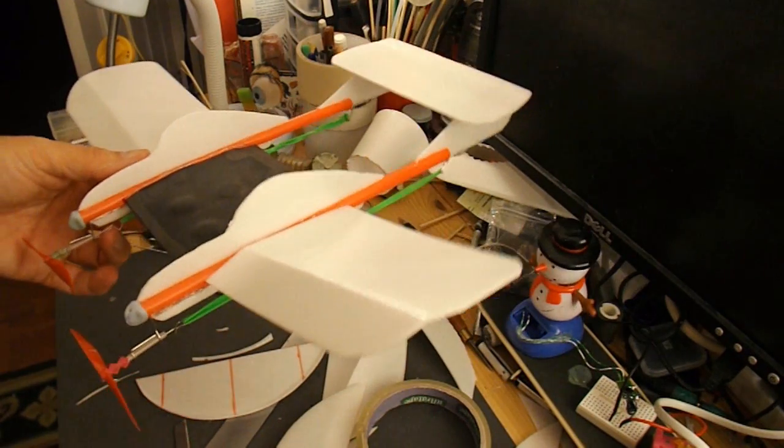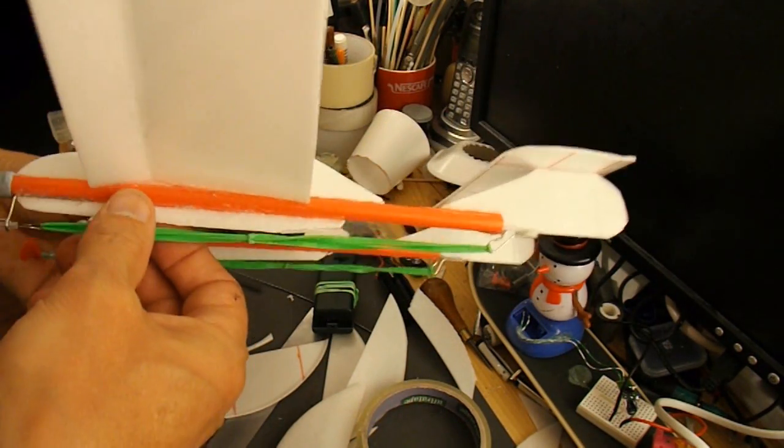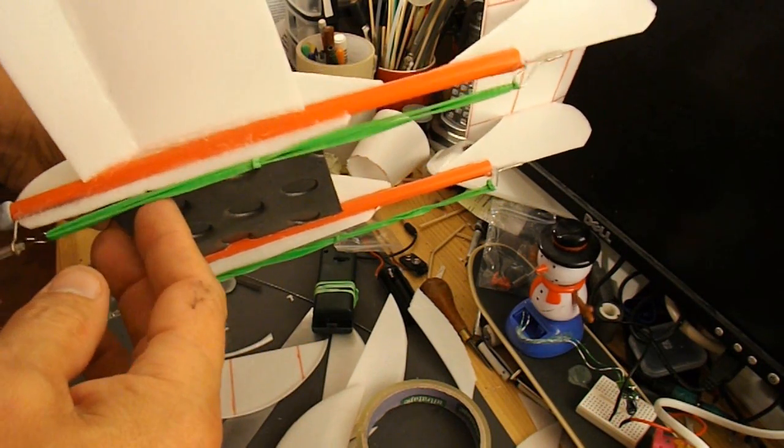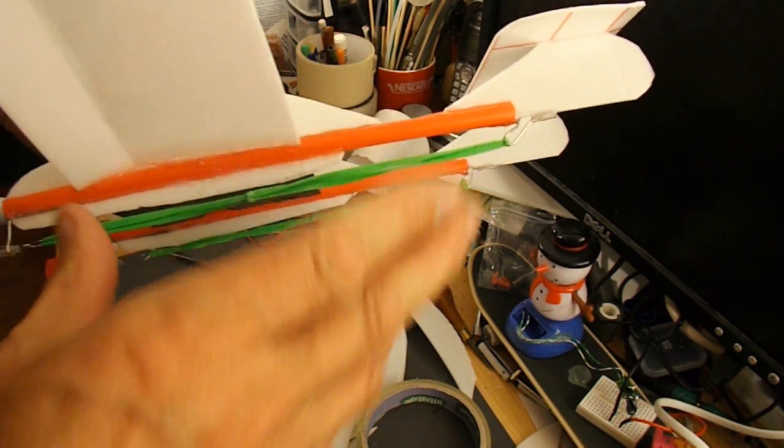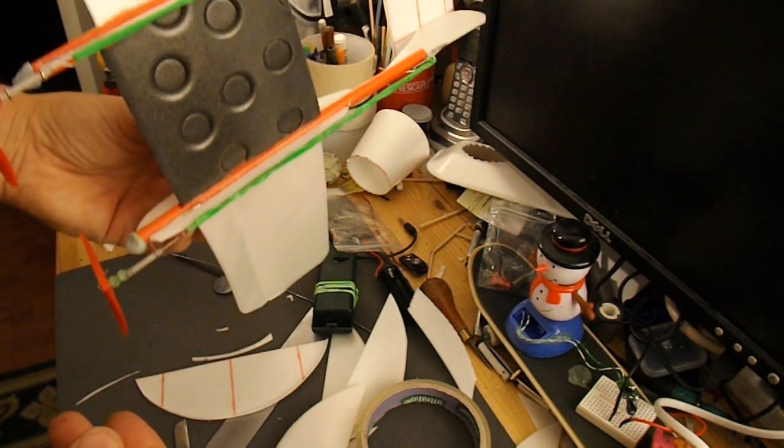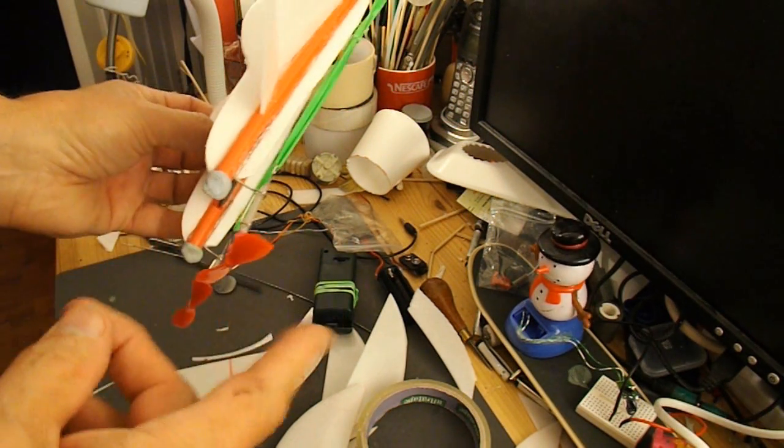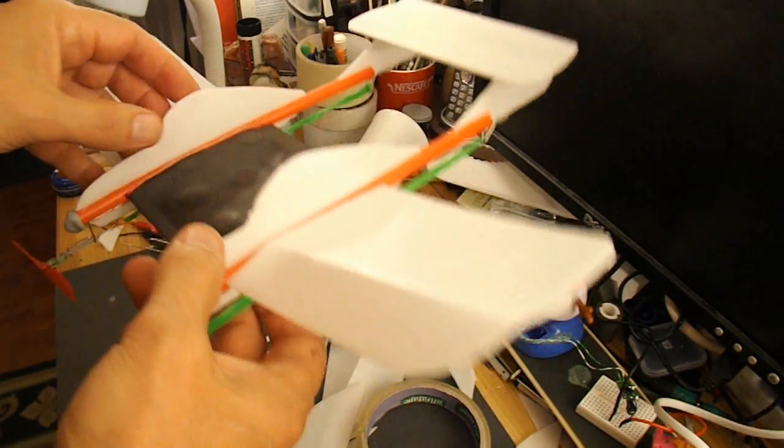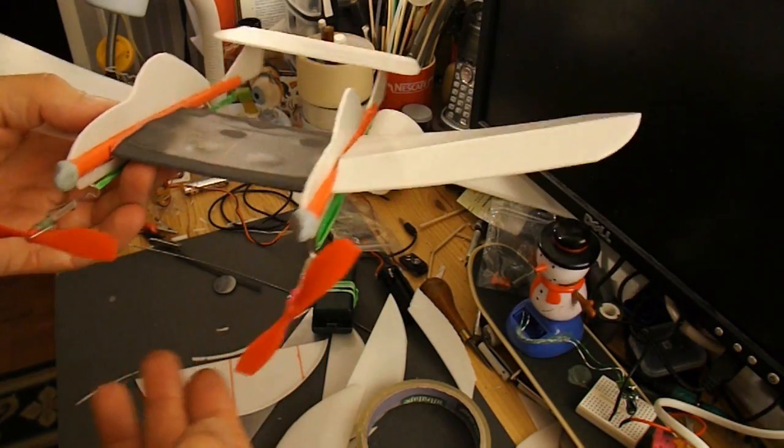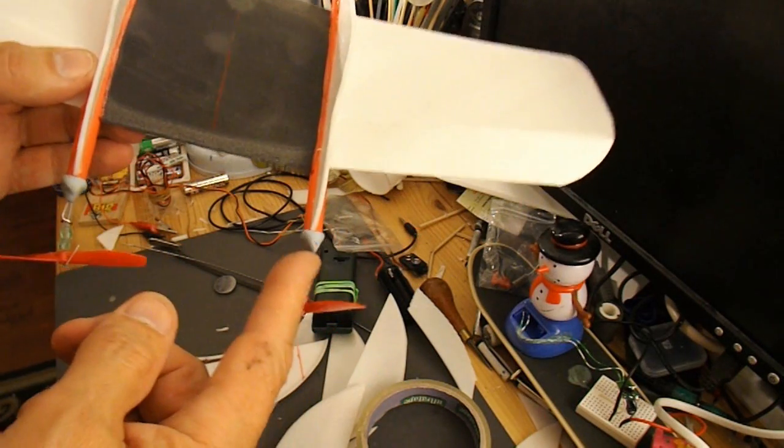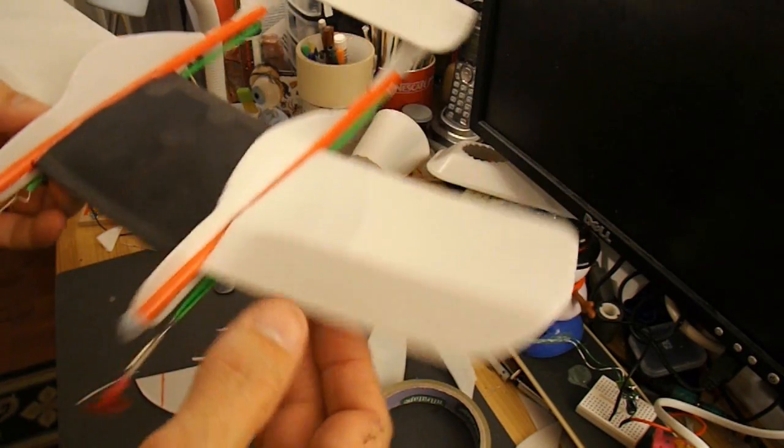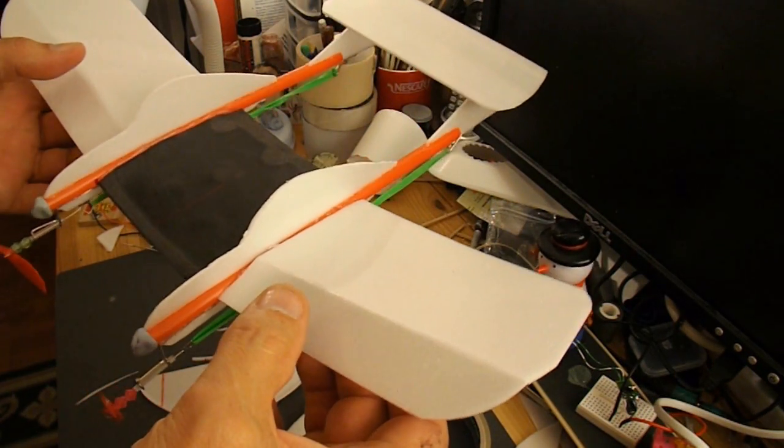Well there we are, all together. They're rather short rubber band motors because they're only the length of the drinking straws. And they're small propellers. So I don't think it's going to go very far under power. And I've got some bits of blue tack sticking in the front of the drinking straws to help the balance for the center of gravity.